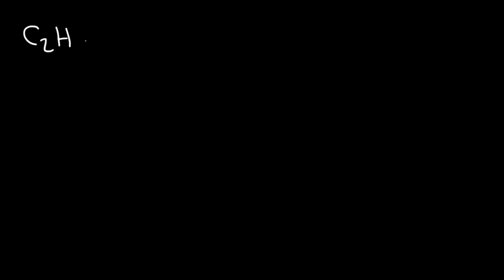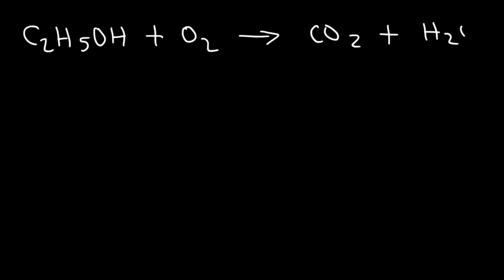Here's a different example. We have a molecule that contains carbon, hydrogen, and oxygen — ethanol — and we're going to react it with oxygen in a combustion reaction. The steps are very similar to the previous examples, with one additional step. Balance carbon first: we have 2 on the left, so we put a 2 in front of CO₂. Next, balance hydrogen: we have 6 hydrogen atoms on the left (5 plus 1). Six divided by 2 is 3, so we put a 3 in front of H₂O.